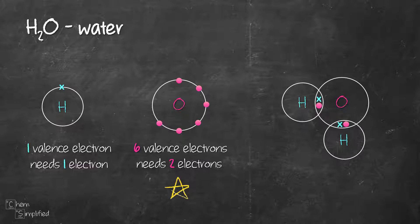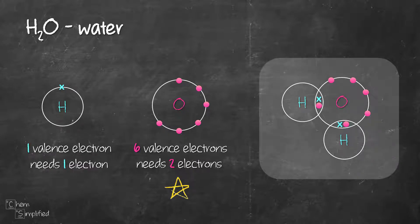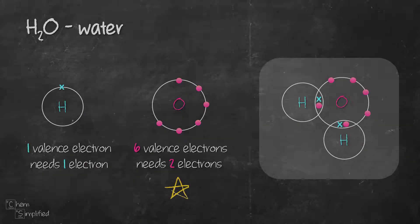That took care of the one electron that hydrogen has. As for oxygen, it has used up two out of the six valence electrons. We're going to add the remaining four on the oxygen, and with that we're done drawing the dot and cross diagram for H2O. Both hydrogens have two electrons to fill out their valence shell, and oxygen has a total of eight electrons, so its valence shell is now full.